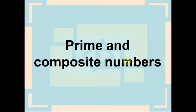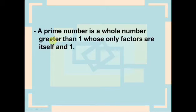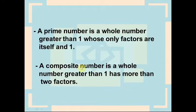Good morning. Today's lesson is on Prime and Composite Numbers. A prime number is a whole number greater than one whose only factors are itself and one — it has only two factors. A composite number is a whole number greater than one and has more than two factors.